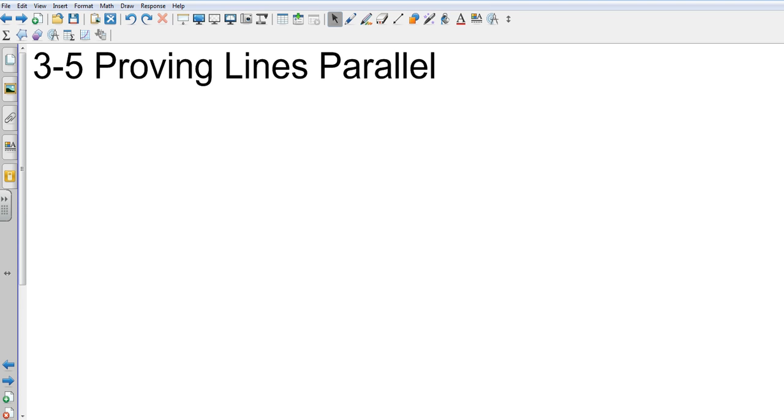Are we gonna have to do proofs again? Well, we're gonna do proofs. They'll be indirect and we won't actually be making our two column proofs, but we're just going to be proving certain things. So in the last section...